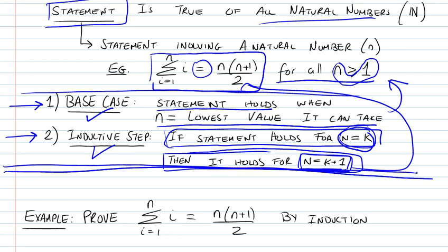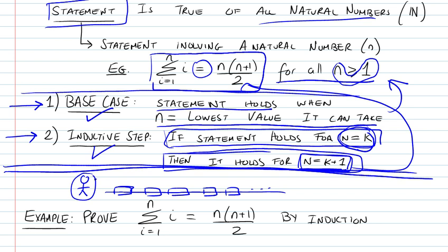One way to understand this intuitively is to imagine a situation where you have a person who wants to step on rocks in a shallow body of water — an infinite number of identical rocks — and you want to prove that this person could jump or step from every single rock to the next one without falling into the water. Using proof by induction, you would first prove that the person could actually stand on the first rock. If you can prove this, that's your base case.